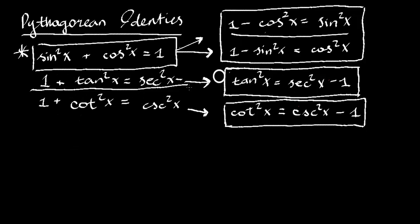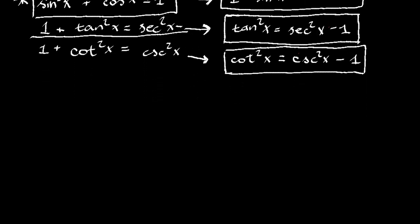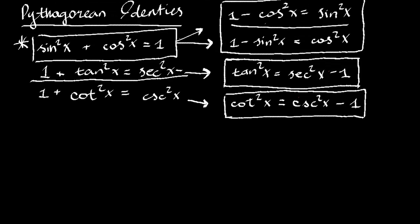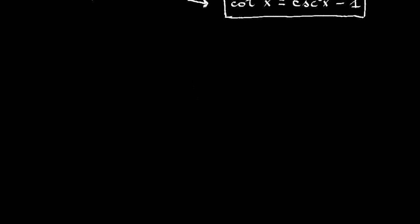I moved the 1 to get secant x squared minus 1 equaling tan x squared. That's really all I did — just rearranged. Remember this one main identity and you will be able to get all these others. Now let's start.